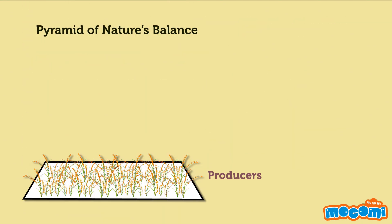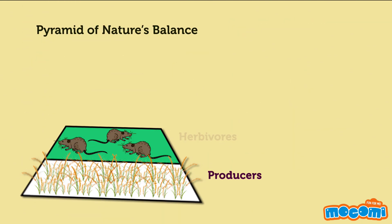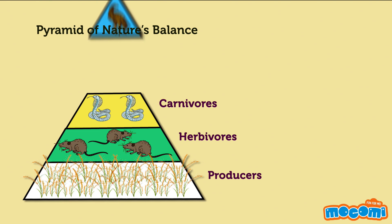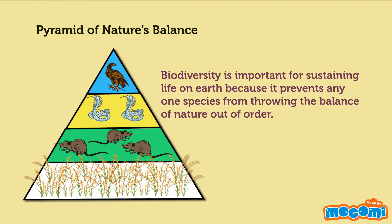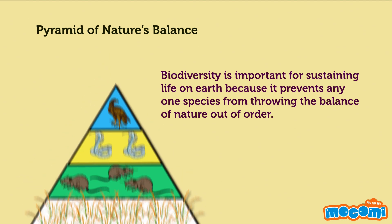The Pyramid of Nature's Balance. Biodiversity is important for sustaining life on Earth because it prevents any one species from throwing the balance of nature out of order.